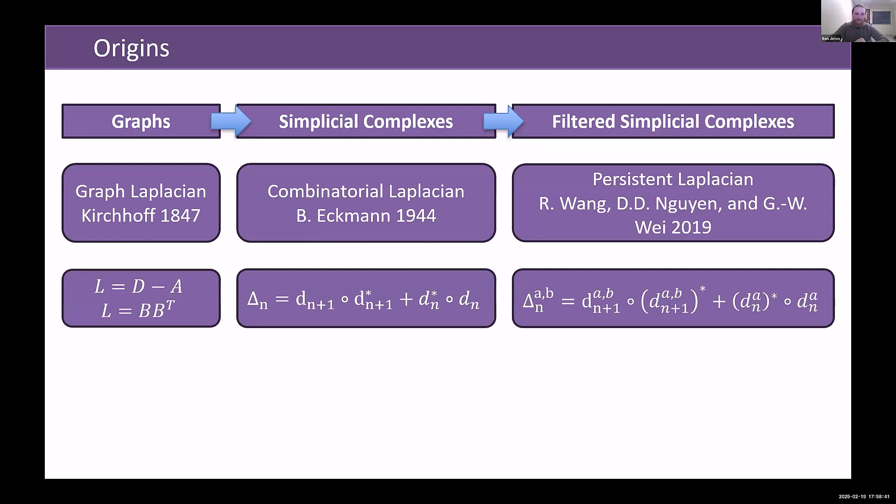As we saw with the graph Laplacian, it takes a form L equals D minus A, but we can also write it in the form of an incidence matrix, which is actually just another name for the boundary matrix of the one skeleton. And we can compute that Laplacian as the product of that matrix and its transpose.